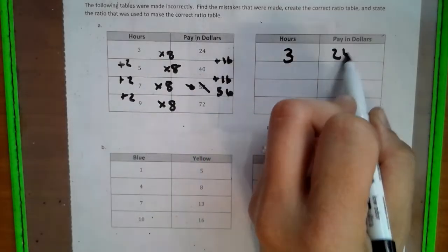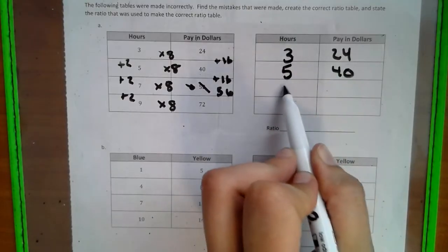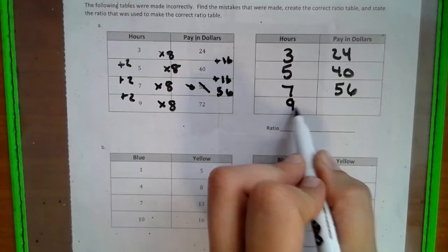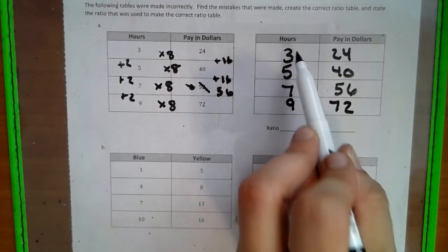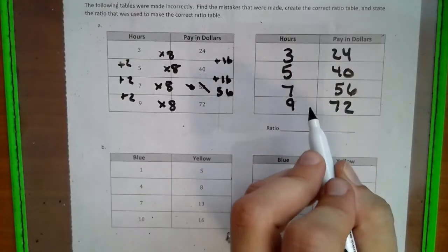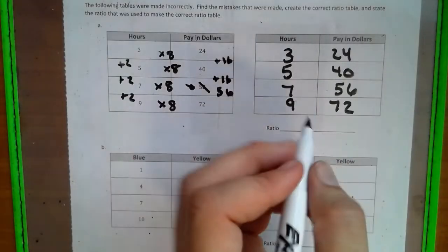So we come over here and we rewrite it as a ratio table that now has equivalent ratios in it. And what I mean by equivalent ratios is if I were to make this into a fraction, 3 24ths, 5 40ths, 7 56ths, 9 72nds, these will all be in the same ratio.